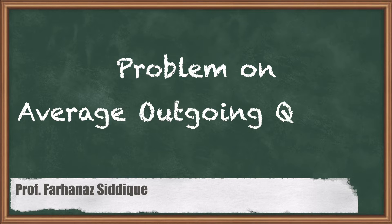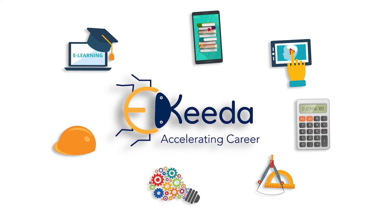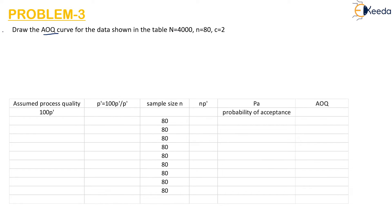Hello students, today let us solve a problem on average outgoing quality and draw the average outgoing quality curve. In the question they have asked us to draw the average outgoing quality curve for the data where n is the lot size, small n is the sample size that is 80, and c is the acceptance number which is given as 2.